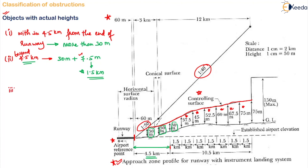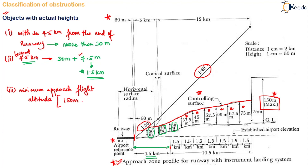The third and final rule: any object which projects above 150 meters from the ground or above the minimum approach flight altitude — whichever is applicable — is considered an obstacle. So the criteria here is the minimum approach flight altitude or 150 meters from the ground. This is how we can understand objects with actual height as an obstacle.